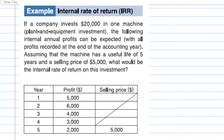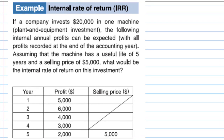For this recording, I'm going to show you how to compute the internal rate of return, IRR. If a company invests $20,000 in one machine, and the following internal annual profits can be expected with all profits recorded at the end of the accounting year. Assume that the machine has a useful life of five years and a selling price of $5,000. What would be the internal rate of return on this investment?